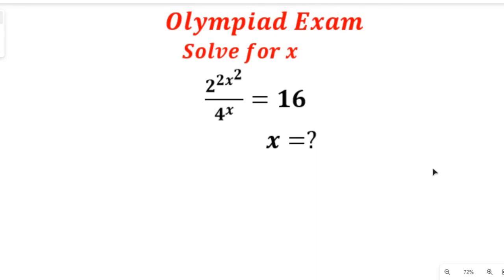Hello and welcome to a Mathematics Olympiad exam tutorial for today. In today's tutorial we are going to solve for x in the equation 2 to the power of 2x squared divided by 4 to the power of x equal to 16. We are actually asked to find the value of x.